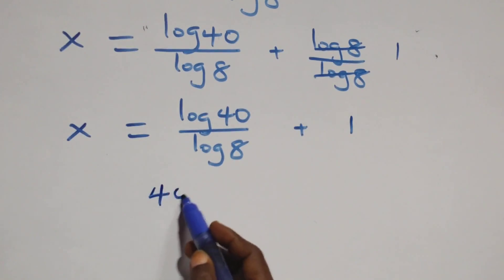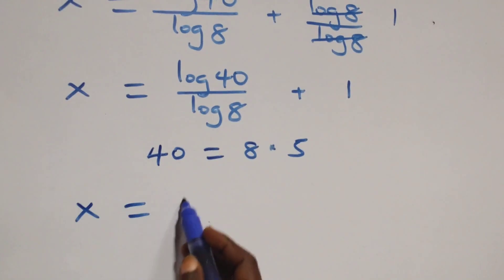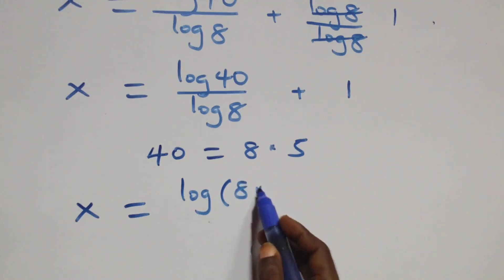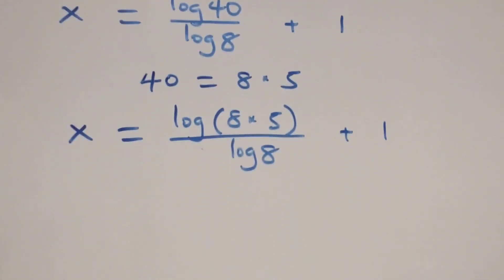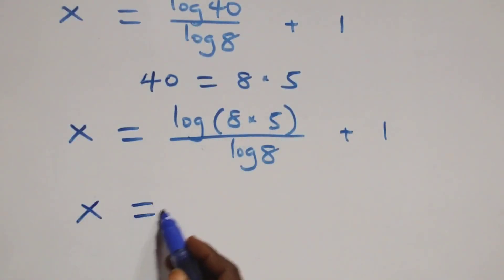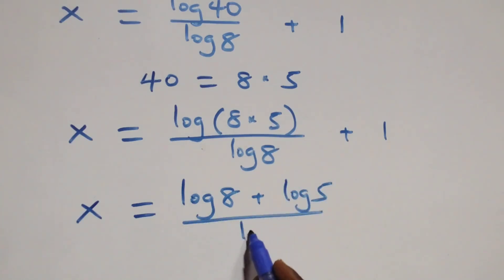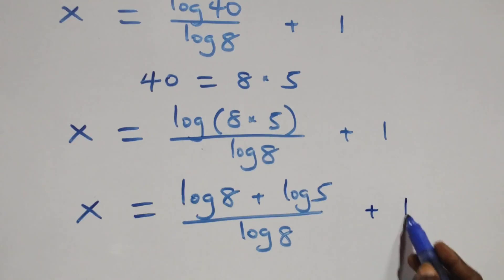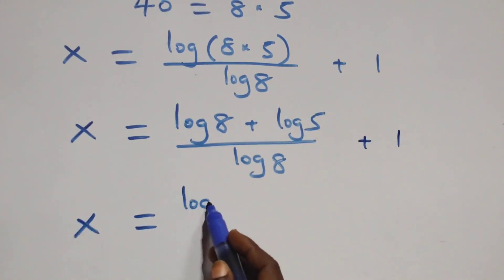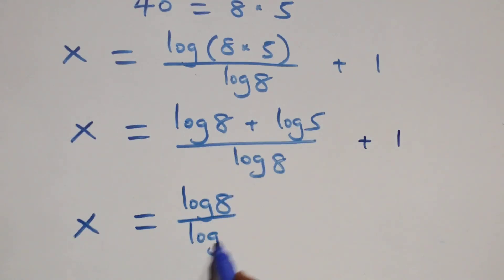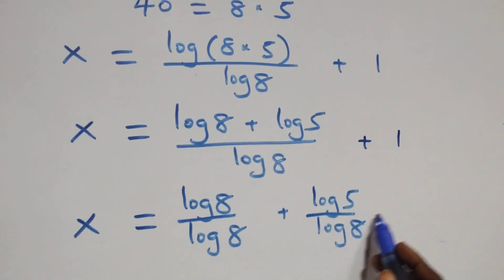We can write 40 as 8 times 5. So all we have becomes x equals log(8 times 5) over log 8, plus 1. Applying the log product rule, this becomes x equals log 8 plus log 5 over log 8, plus 1.